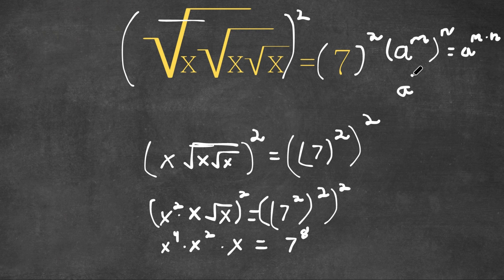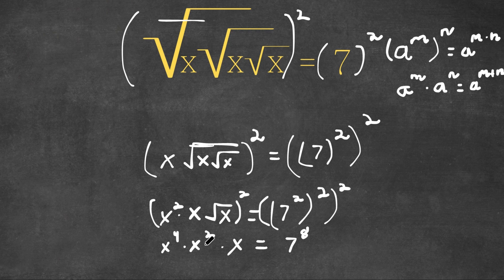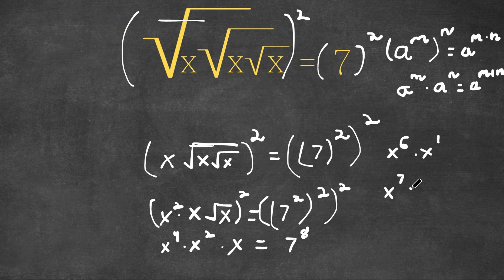Now, if we have something in the form a to the power of m times a to the power of n, this equals a to the power of m plus n. So x to the power of 4 times x squared equals x to the power of 4 plus 2, which is x to the power of 6. Then x to the power of 6 times x — since x is the same as x to the power of 1 — gives us 6 plus 1 equals 7. So now we have x to the power of 7 is equal to 7 to the power of 8.